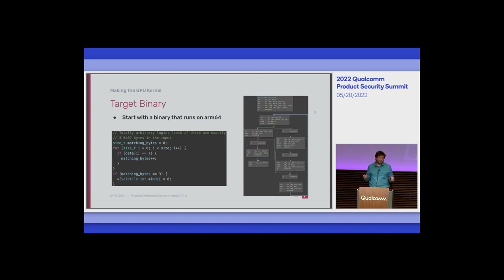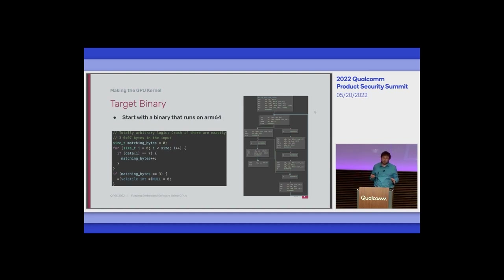We start with a binary running ARM64. It's important to say we don't work off source code — we work off the binary. In this case it's ARM64, but we're not really limited by the original architecture as long as we can lift it. We use Remill, an open-source library from Trail of Bits that translates various binary architectures to LLVM bitcode.